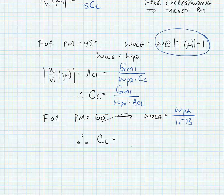And hence, our compensation capacitor for a 60 degree phase margin ends up being 1.73 times gm1 divided by omega_p2 times our closed loop gain.